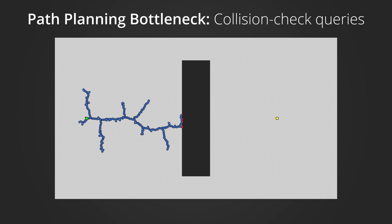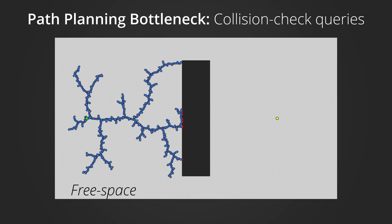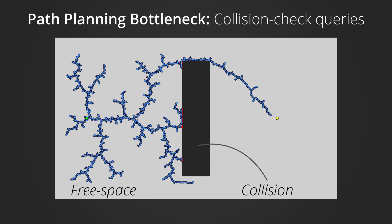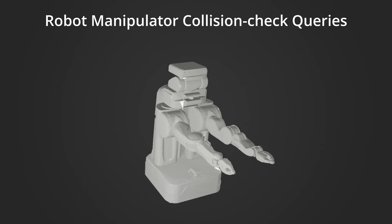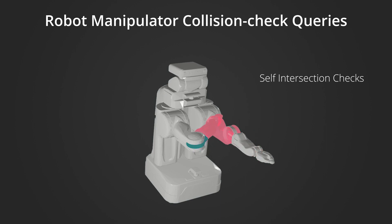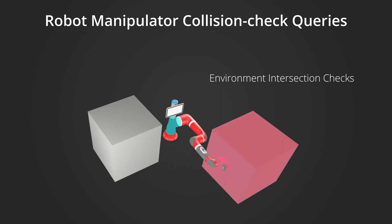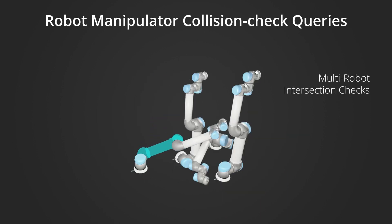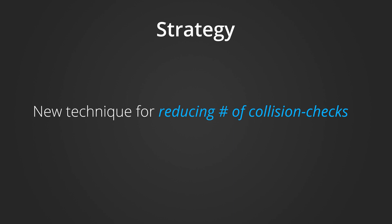One of the main bottlenecks in sampling-based path planning is needing to check whether the many samples taken from the configuration space lie in free space or in collision. This check is commonly referred to as a collision check query. These collision check queries are particularly expensive in a robot manipulator context, where just one collision check query involves intersection checks between pairs of the robot's own links for self-collisions, intersection checks between the robot's links and the environment, and potentially intersection checks between all pairs of links between multiple robots. Given the relatively high computation cost of each collision check, the overriding strategy of our method is to reduce the number of collision check queries.